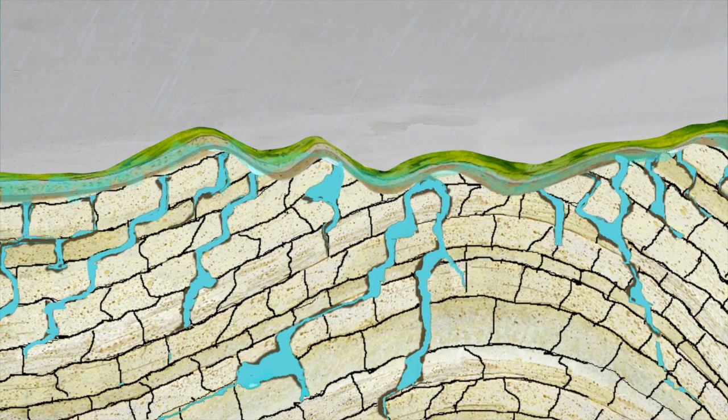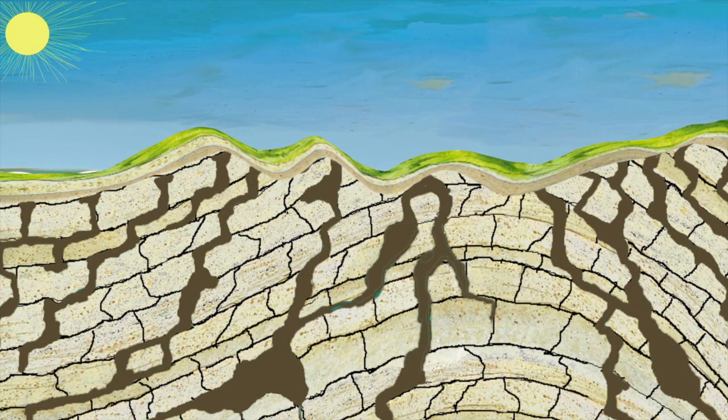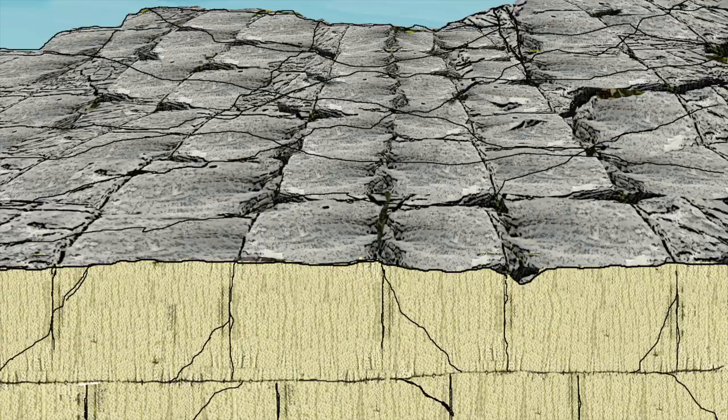Gradually, the limestone dissolves, the surface erodes and the cracks grow. It is in this way that cavities, caves and gulfs are formed.